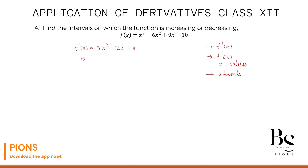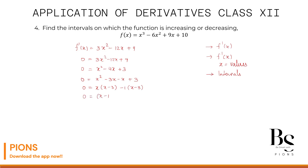Put f'(x) = 0: 3x² - 12x + 9 = 0. Dividing by 3 gives x² - 4x + 3 = 0. Using middle term splitting: x² - 3x - x + 3 = 0. Taking x common gives x(x - 3), and taking -1 common gives -1(x - 3). So (x - 1)(x - 3) = 0, giving x = 1 and x = 3.